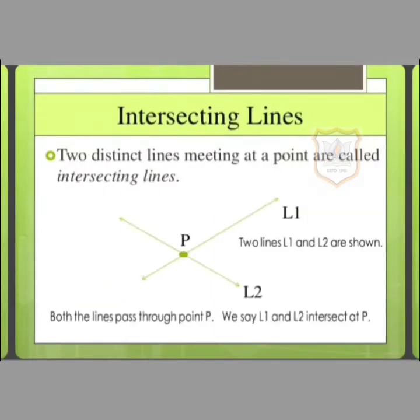Our next topic is intersecting lines. Two distinct lines meeting at a point are called intersecting lines. Here you can see L1 and L2, two lines are given and both the lines pass through point P. So we can say that L1 and L2 intersect at point P. If two lines lie in the same plane and are not parallel to each other, they are called intersecting lines.